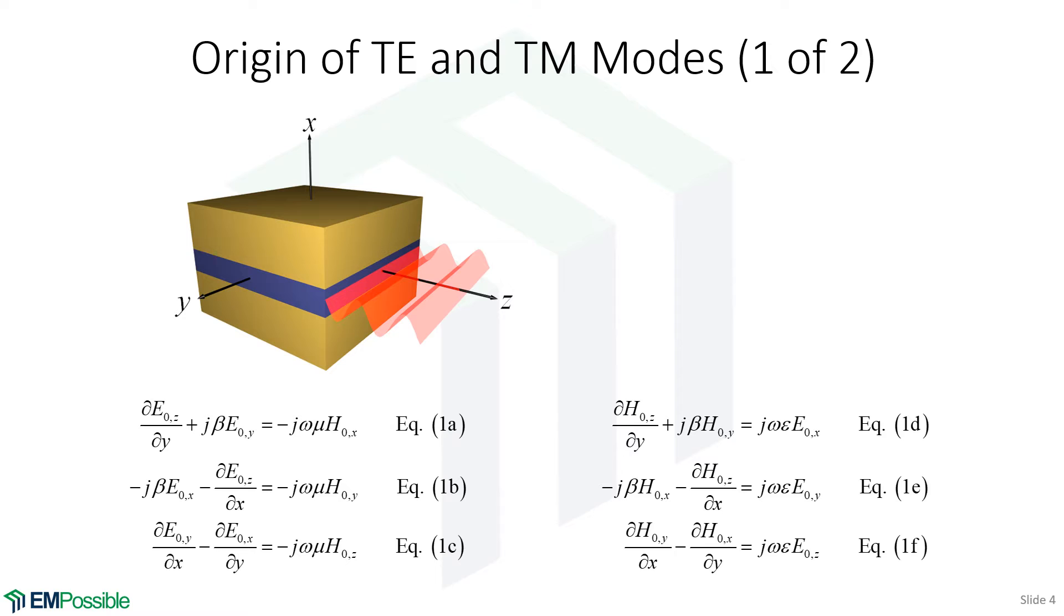We back up to our set of six coupled partial differential equations. These are the equations after we've substituted in our form of the solution.